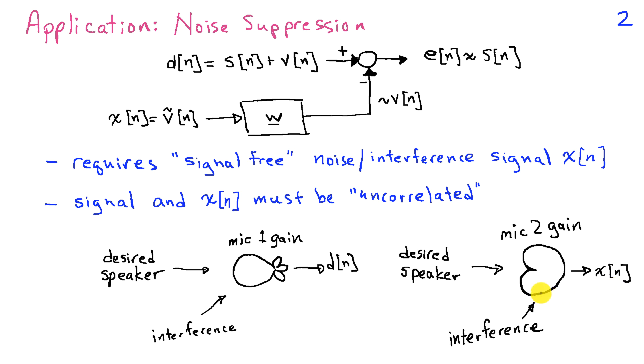And because this microphone has a different gain pattern than the first microphone and is located in a different position, the interference that we observe here is not identical to the interference that was observed there. And by filtering x of n appropriately, we can estimate the interference that was contaminating microphone 1 and subtract it out to get an estimate of our desired signal. You can do very similar things with antennas or basically any sensor provided you have the ability to remove the desired signal from one of the reference channels.